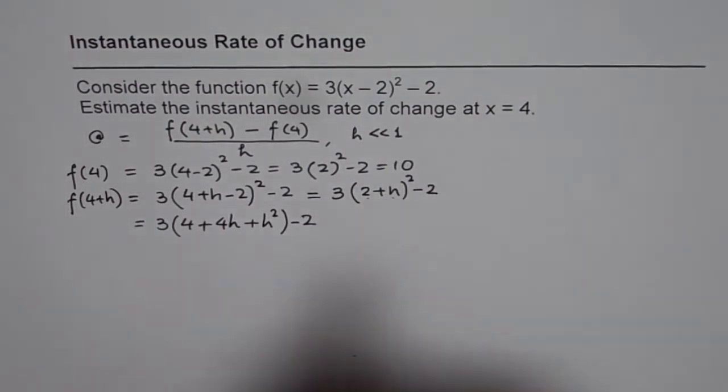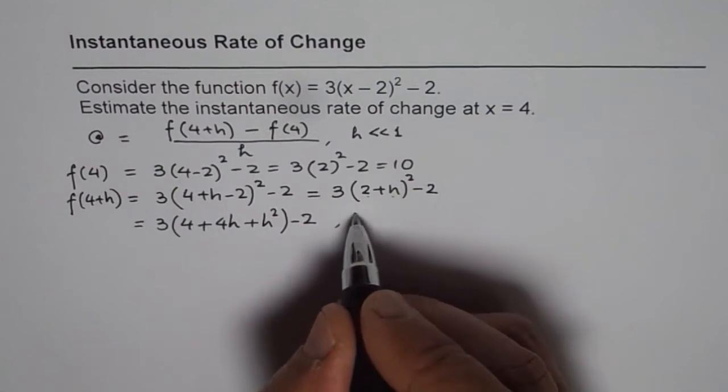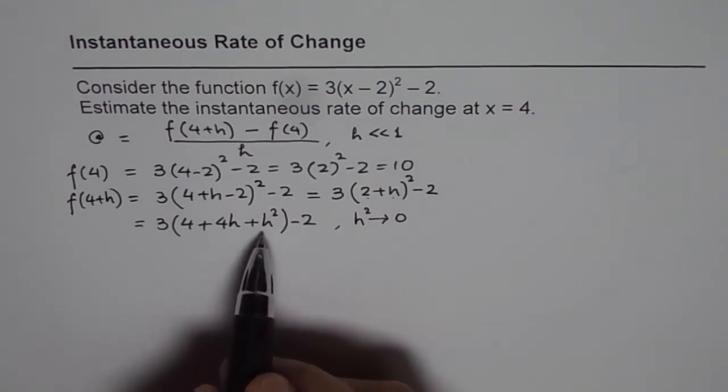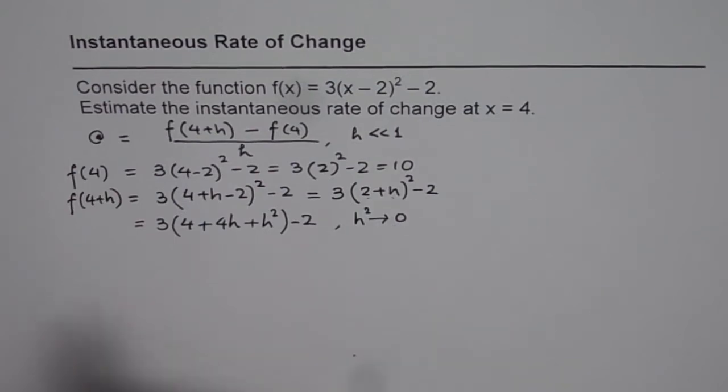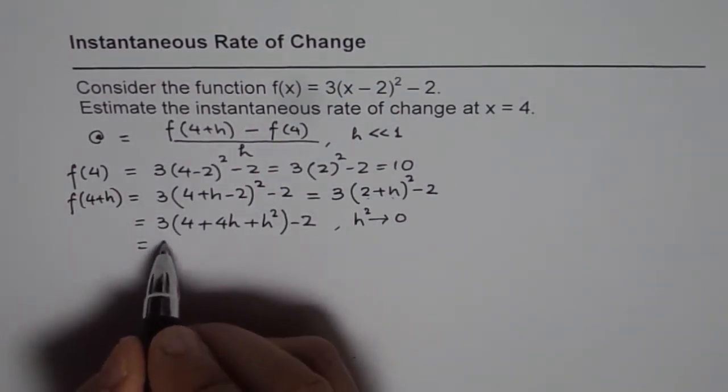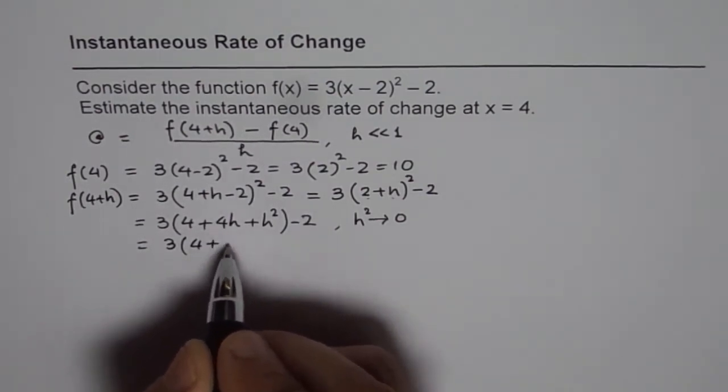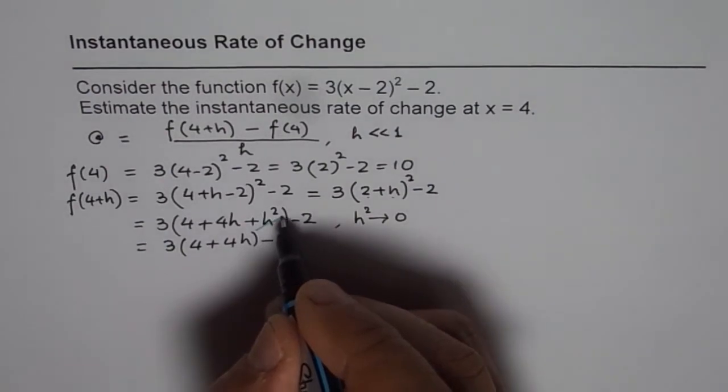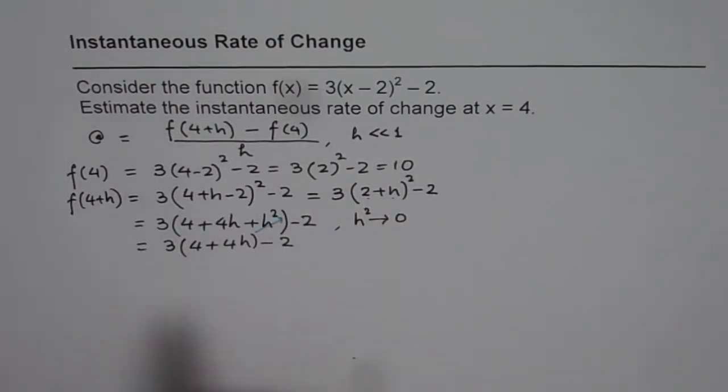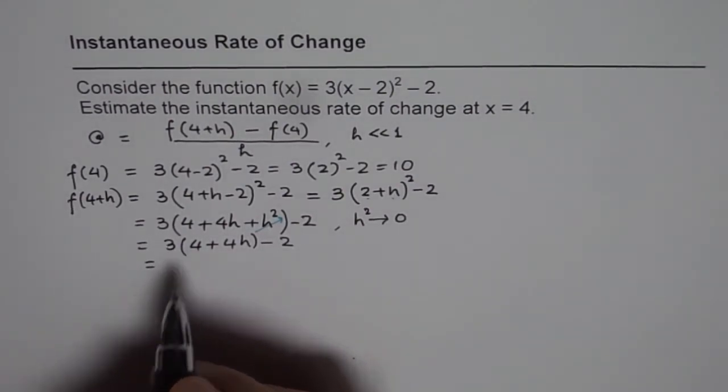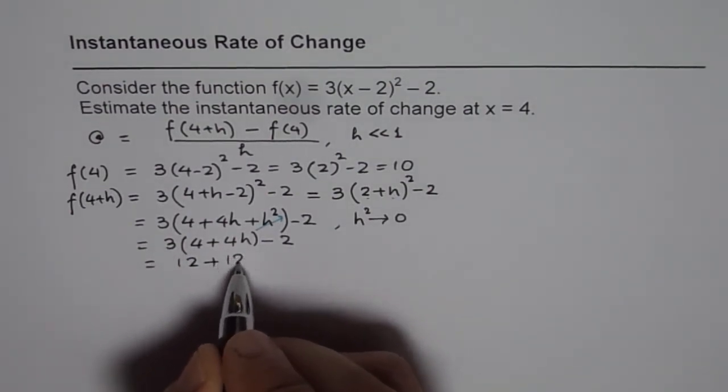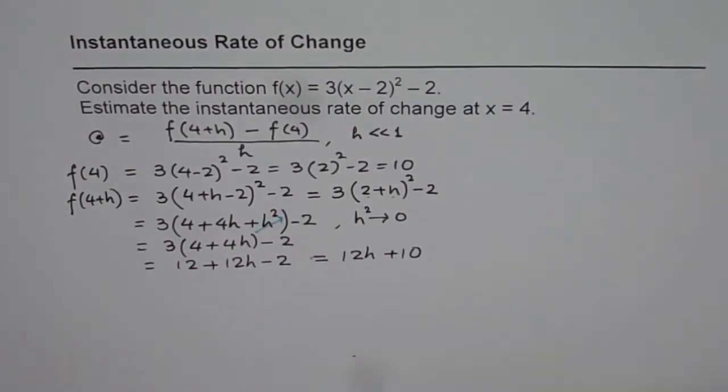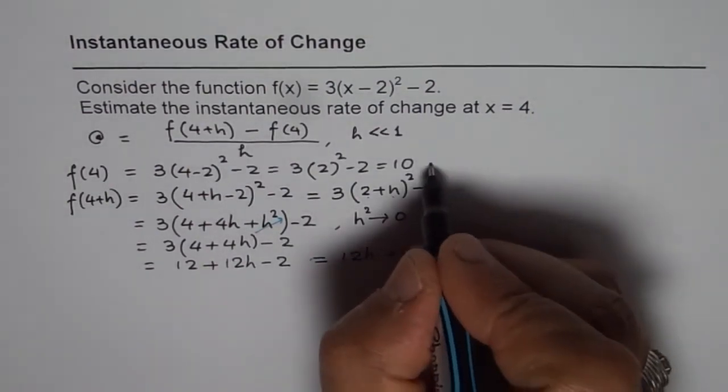Now remember, if h is very, very small then h² will be approaching 0. So in this equation we can write h² as 0. So it comes down to 3(4 + 4h) - 2. At this stage you can open the bracket and simplify it, so you get 3 × 4 as 12, plus 3 × 4h as 12h, minus 2, and that is indeed equal to 12h + 10. So we found the values of f(4) which is equation 1 and f(4 + h).